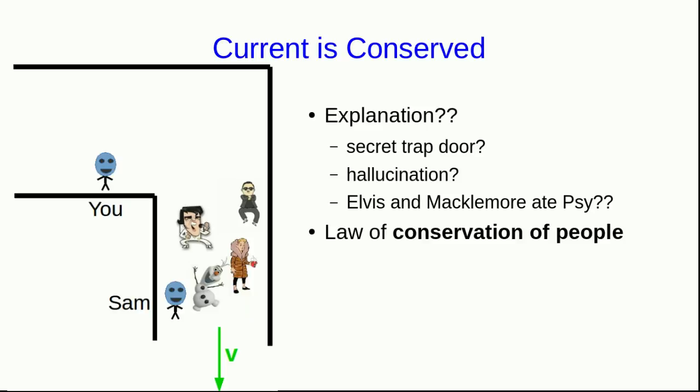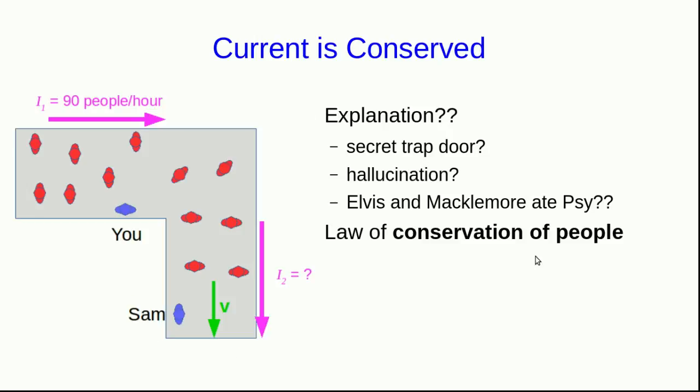So if Sam reported that Psy, Elvis, Macklemore, and Olaf the snowman walked past, you would be equally surprised. So more generally, if you counted a what we might call people current of 90 people per hour passing you in the hallway, as long as there are no doorways or branches in the hall that other people can go down or come in from, Sam ought to certainly report the same 90 people per hour as the observed people current. Any other number either means people are being created or destroyed and we don't really expect that to happen in a typical hallway.